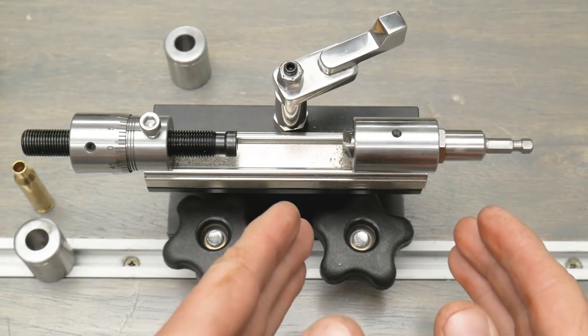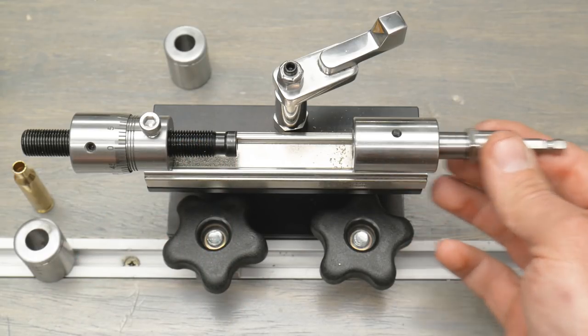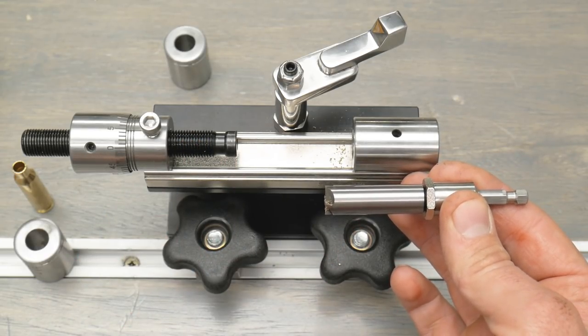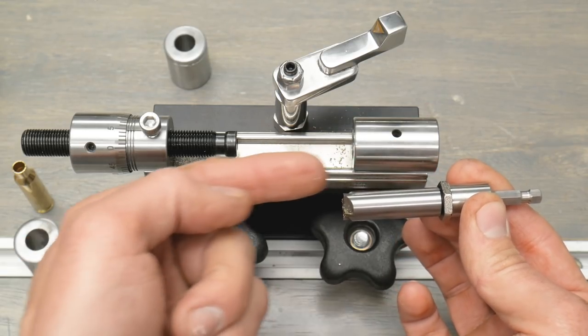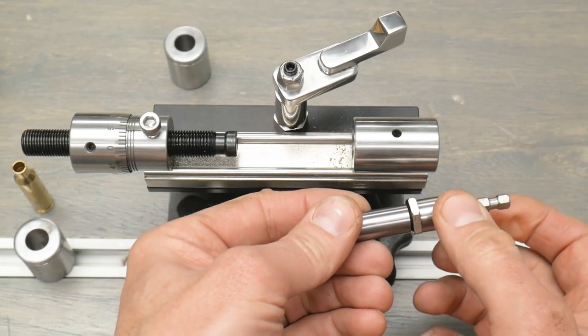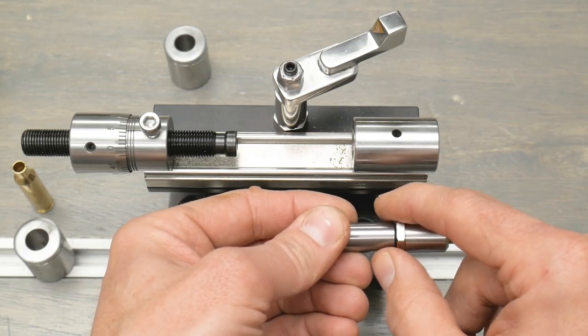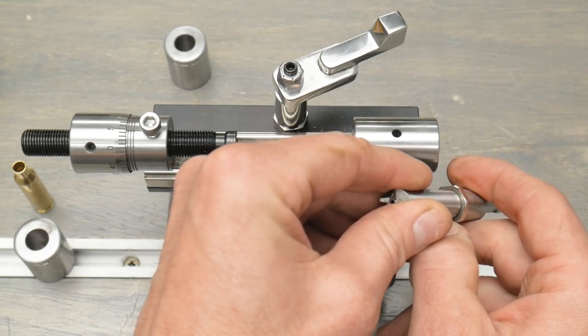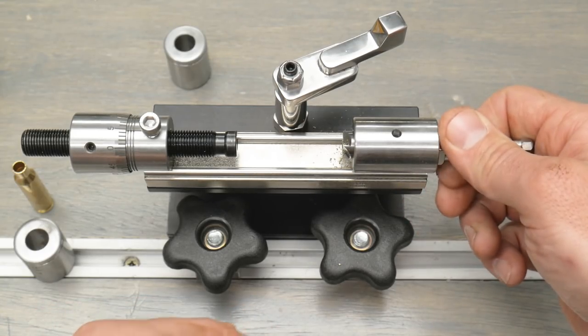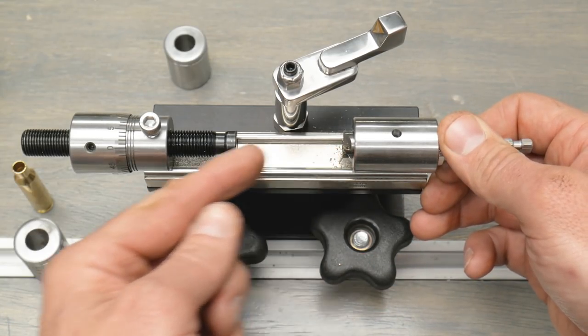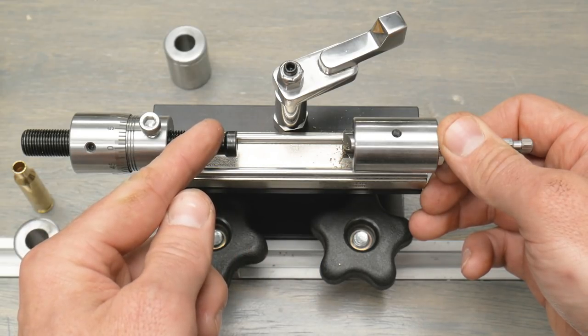The reason for the difference in trim to length when we swap out this trimming head is that we're going to screw it into either the power adapter or the crank handle a different distance and lock it down with that nut. The left hand edge of this nut is what bottoms out against the case trimmer body and that establishes the trim to length, along with the micrometer stops.